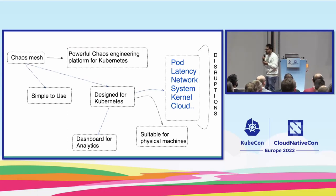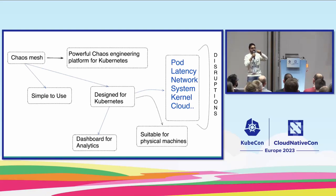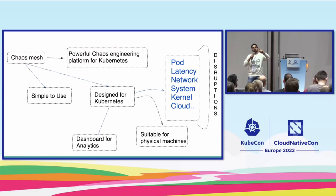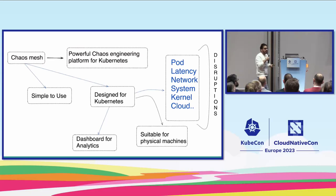It also has workflows. You can create a chaos workflow — if you want to run chaos experiments in serial, one after the other as a series of experiments, you can do that. If you want to run two types of experiments in parallel, you can do that too. That sort of workflow configuration you can also create.